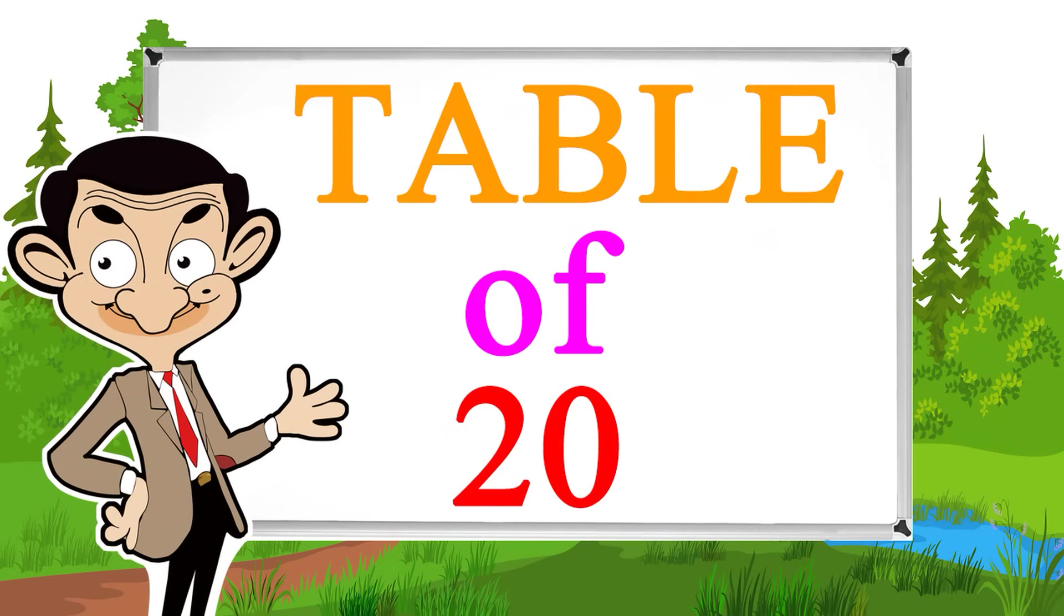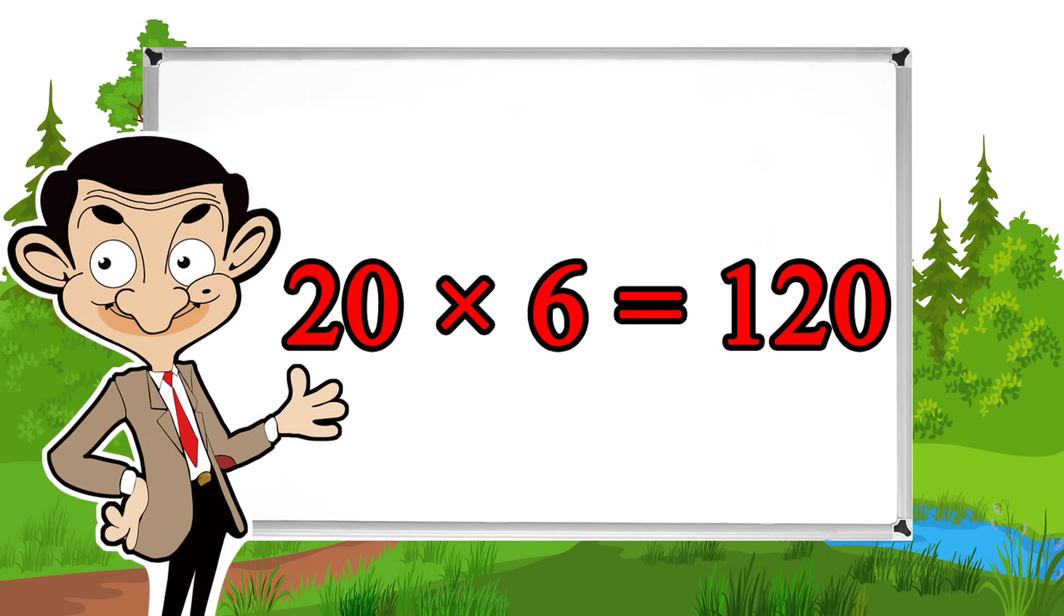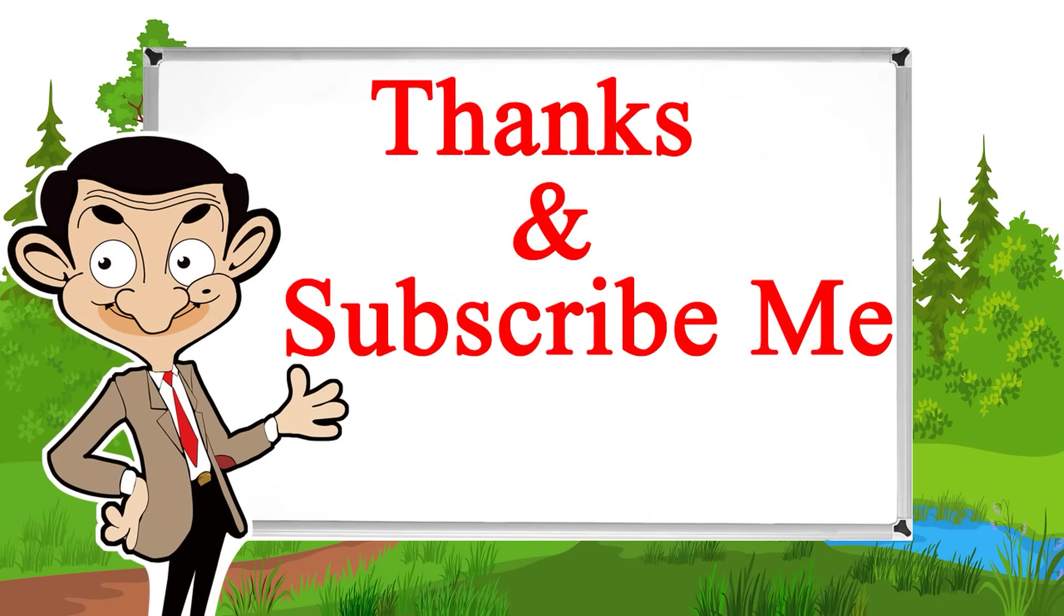20 times 1 equals 20, 20 times 2 equals 40, 20 times 3 equals 60, 20 times 4 equals 80, 20 times 5 equals 100, 20 times 6 equals 120, 20 times 7 equals 140, 20 times 8 equals 160, 20 times 9 equals 180, 20 times 10 equals 200. Thank you.